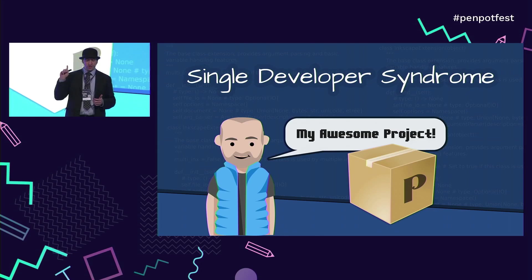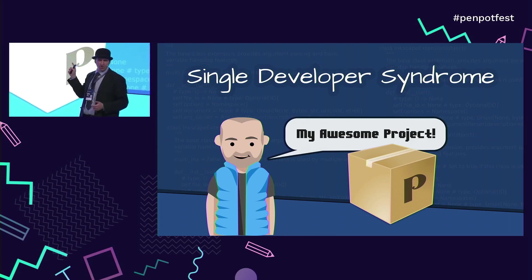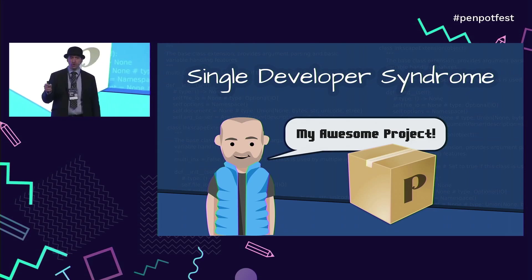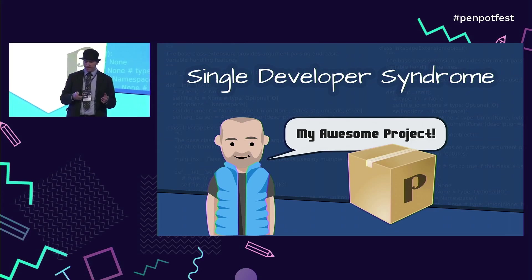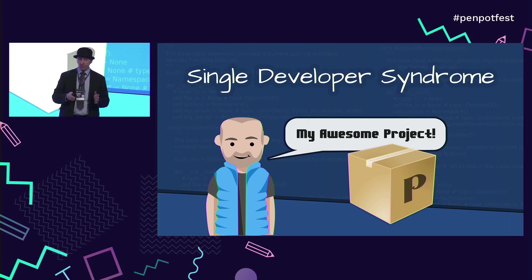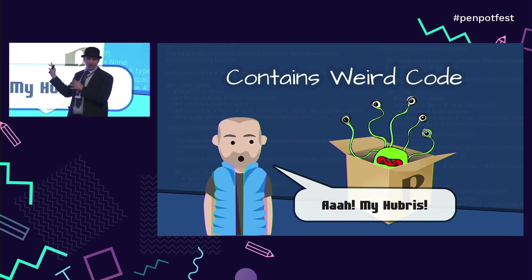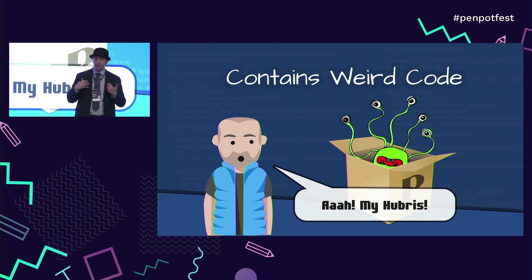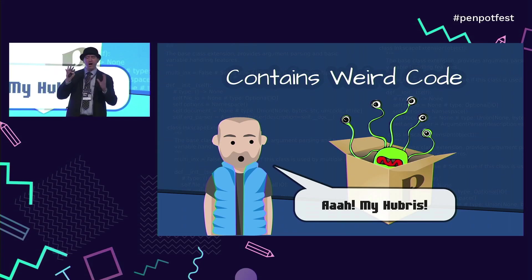Today I want to talk about SVG and 'single developer syndrome.' I apologize if this is slightly developer-focused — I think designers will have the same kinds of issues. Basically, if only a single person is involved in a project's creation, it's going to have very interesting design considerations. It probably works, but it contains weird stuff. You find a project where a person has spent five or ten years crafting something, but as a contributor their code is hard to get into.